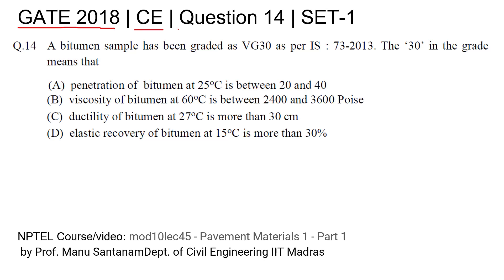This is GATE 2018 Civil Engineering question number 14, Set 1. A bitumen sample has been graded as VG-30 as per IS 73:2013. The question asks what the '30' in the grade means. Let's try to understand and solve this question.